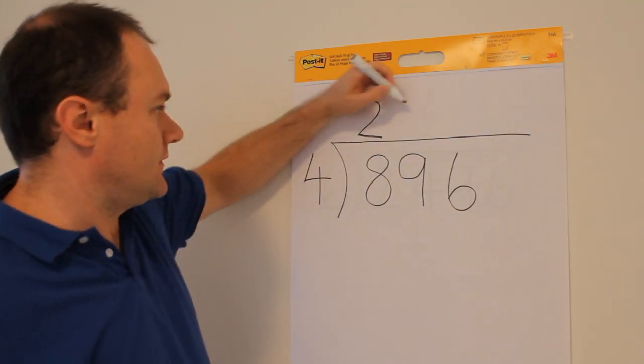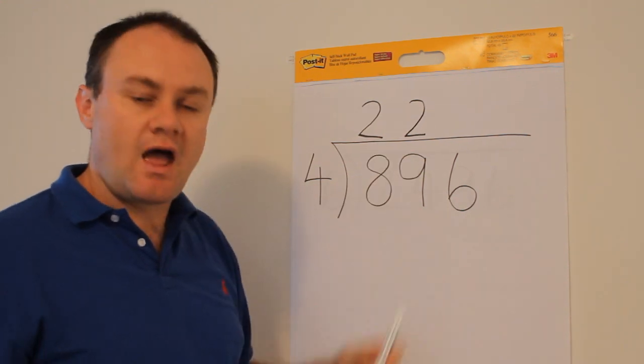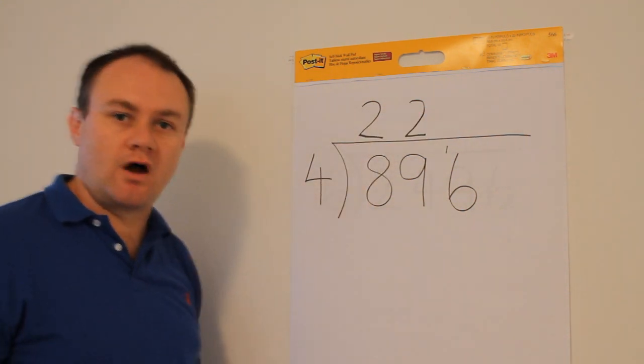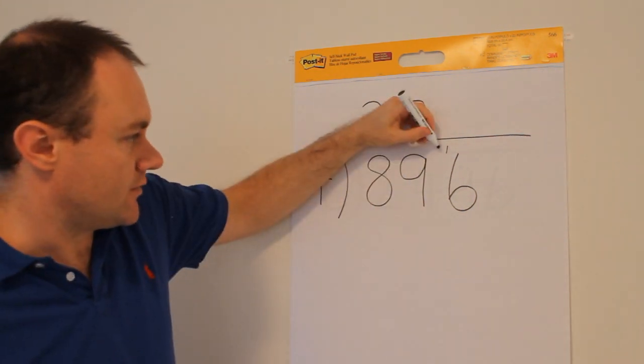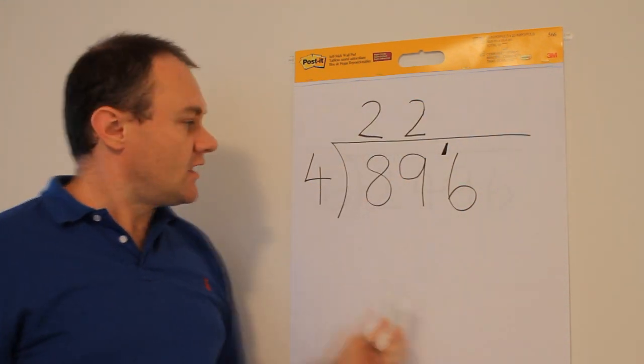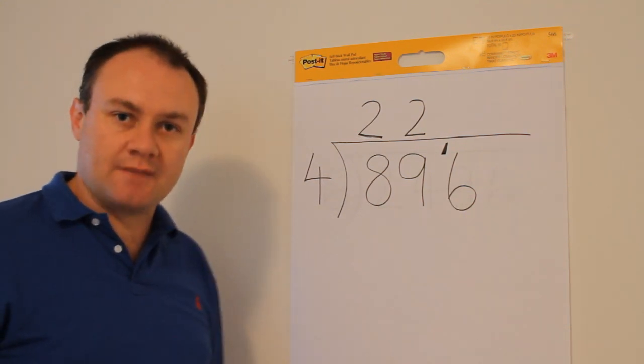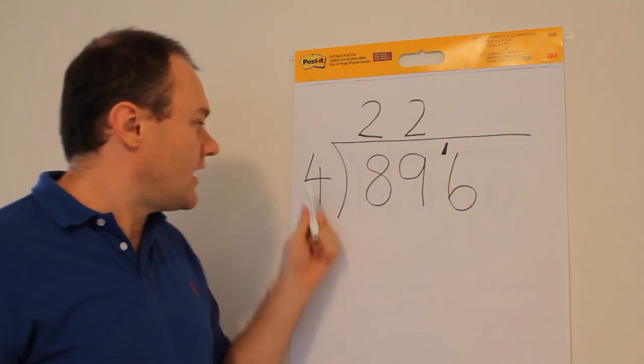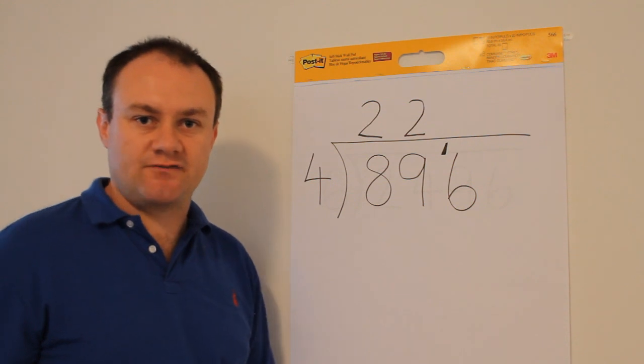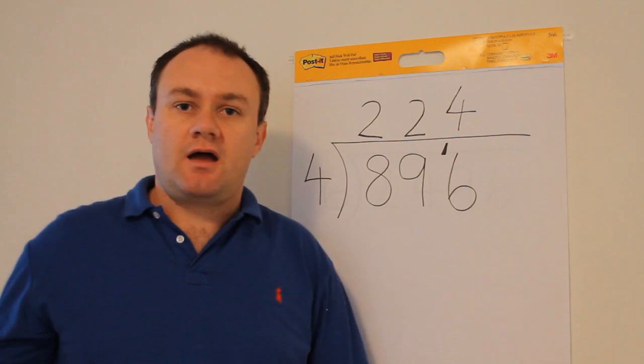So again I write a number two, this time above the second digit the nine, and with the one left over I write it in small writing there just before the six. This now means that this final digit has become 16. And here comes the last part: you then say how many times does four go into 16. And the answer is four. Up it goes and that's it done.